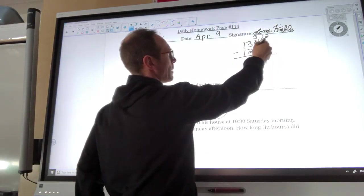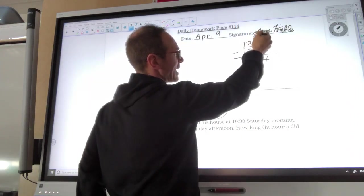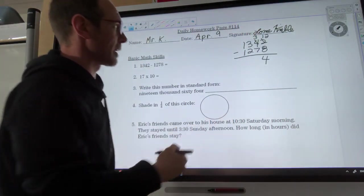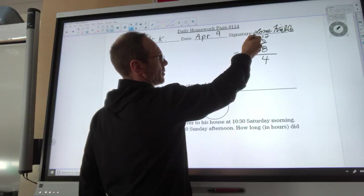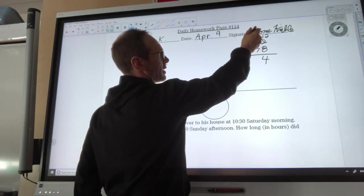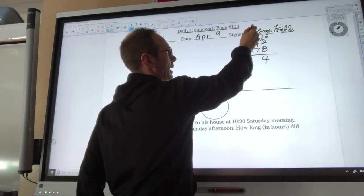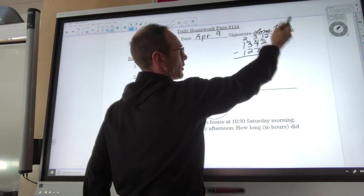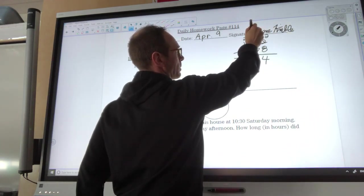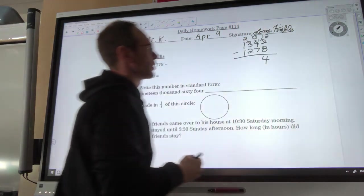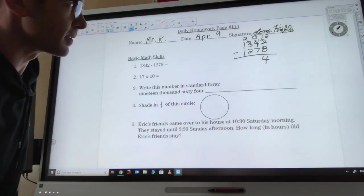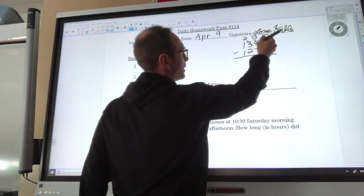Now I have 3 minus 7, actually 3 tens minus 7 tens. It's actually 30 minus 70, so I'm gonna take a hundred from here. This 300 is now gonna become 200, and I'm gonna add a hundred onto the tens place. That becomes 130 or 13 tens.